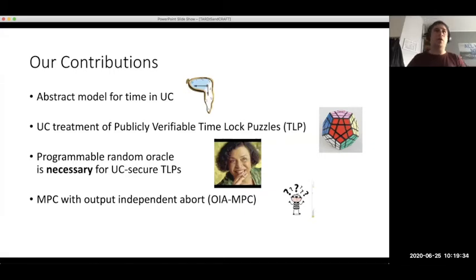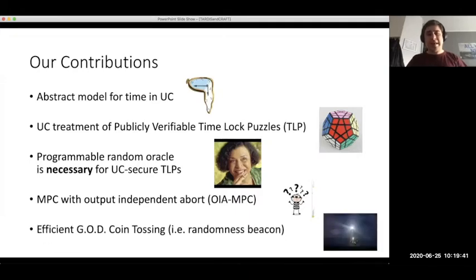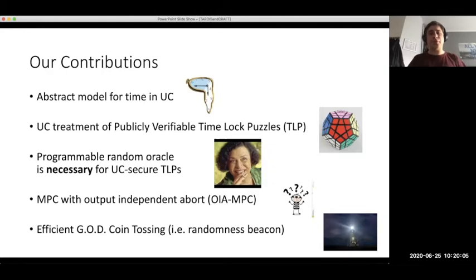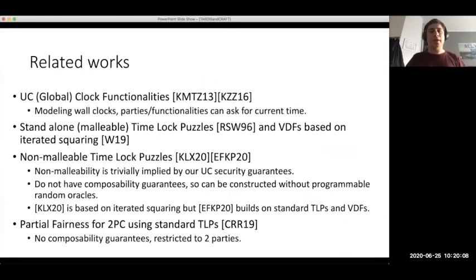Still, we need the full-blown general MPC framework to do that. So we also show that we can build efficient, guaranteed output delivery coin tossing, which gives us unbiased randomness beacons without going through the overhead of general-purpose MPC. As I will show at the end, there is a very simple protocol for obtaining an unbiased randomness beacon.